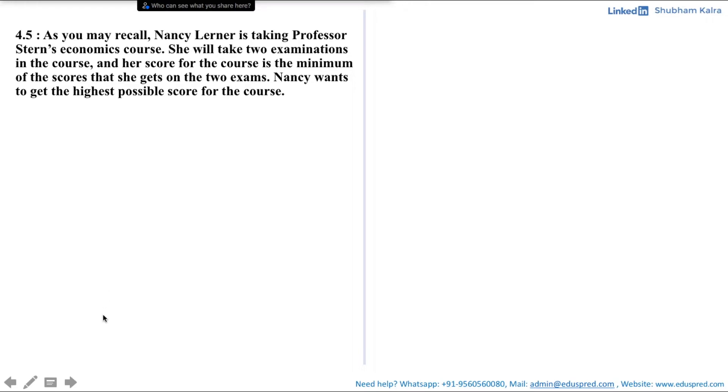Nancy wants to get the highest possible score for the course. With this information, we are asked to write the utility function that represents Nancy's preferences over alternative combinations of test scores X1 and X2 on test 1 and test 2 respectively.